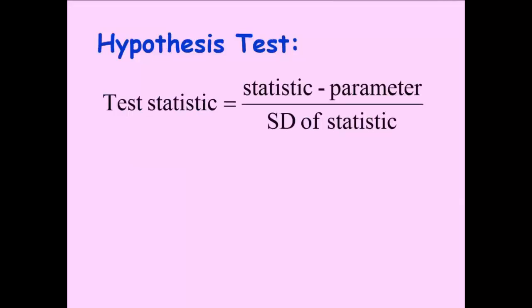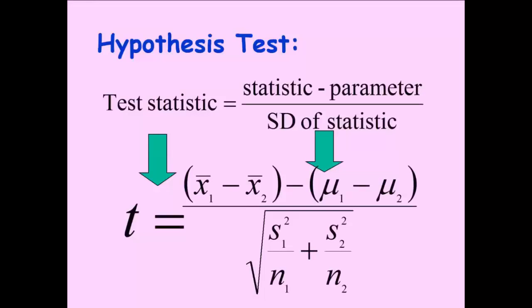All right, so how do we calculate our test statistic? Well, this is a t-process, so we're going to use a t-score. So our statistic for the standard deviation kind of looks like this. So we've got x̄ one minus x̄ two minus μ one minus μ two, so observed minus expected, and then divided by the standard deviation of the sample, which is that standard error we looked at earlier.